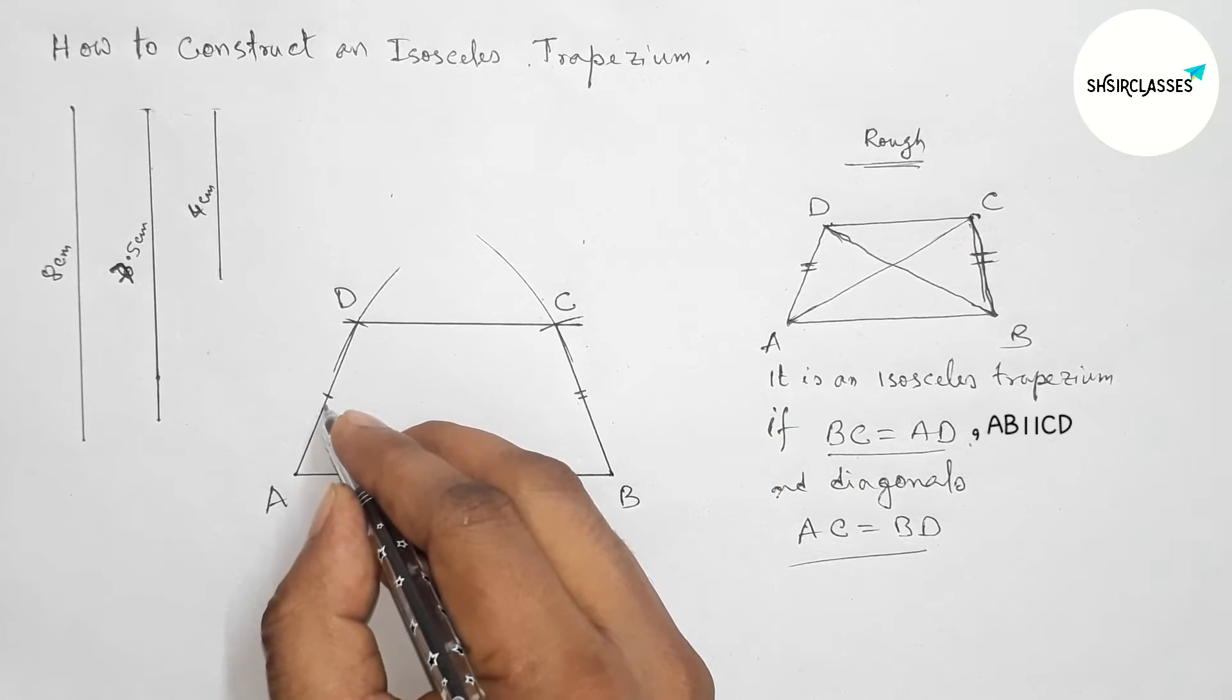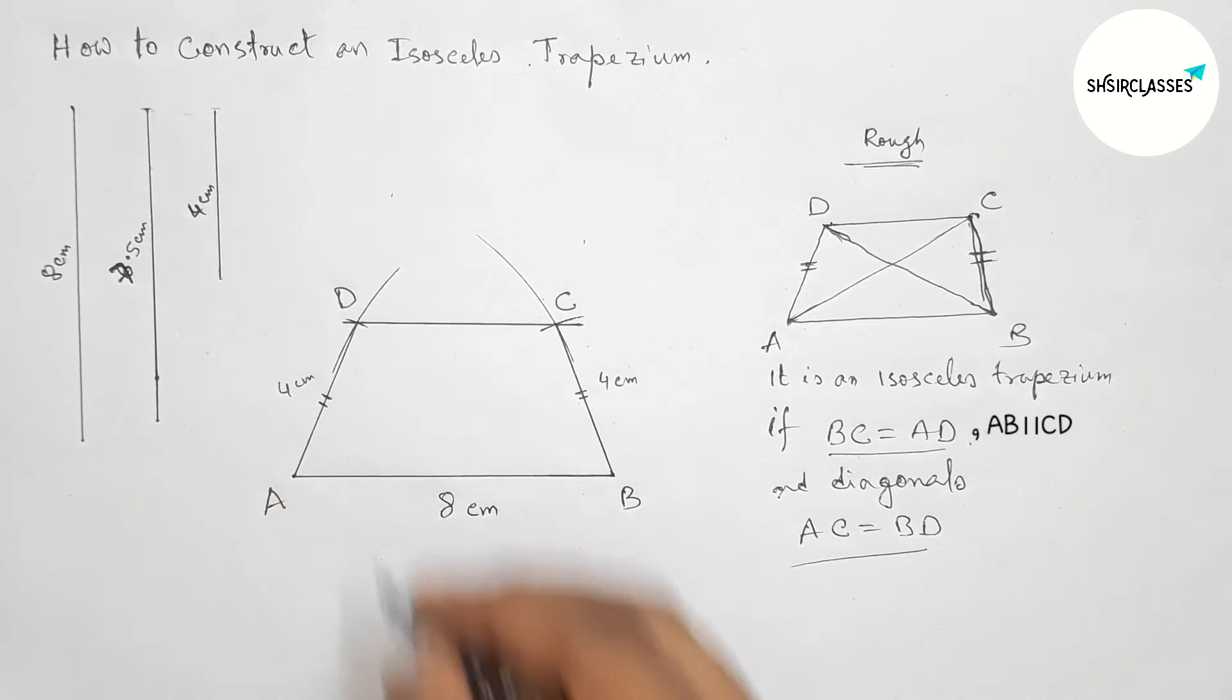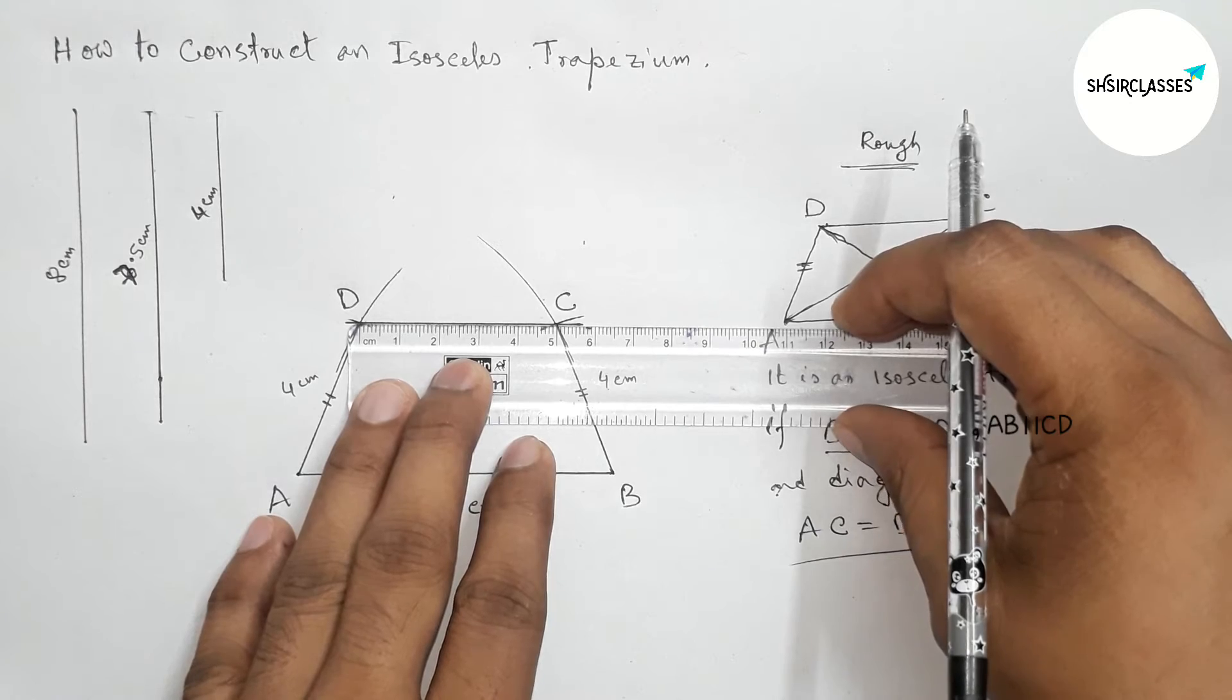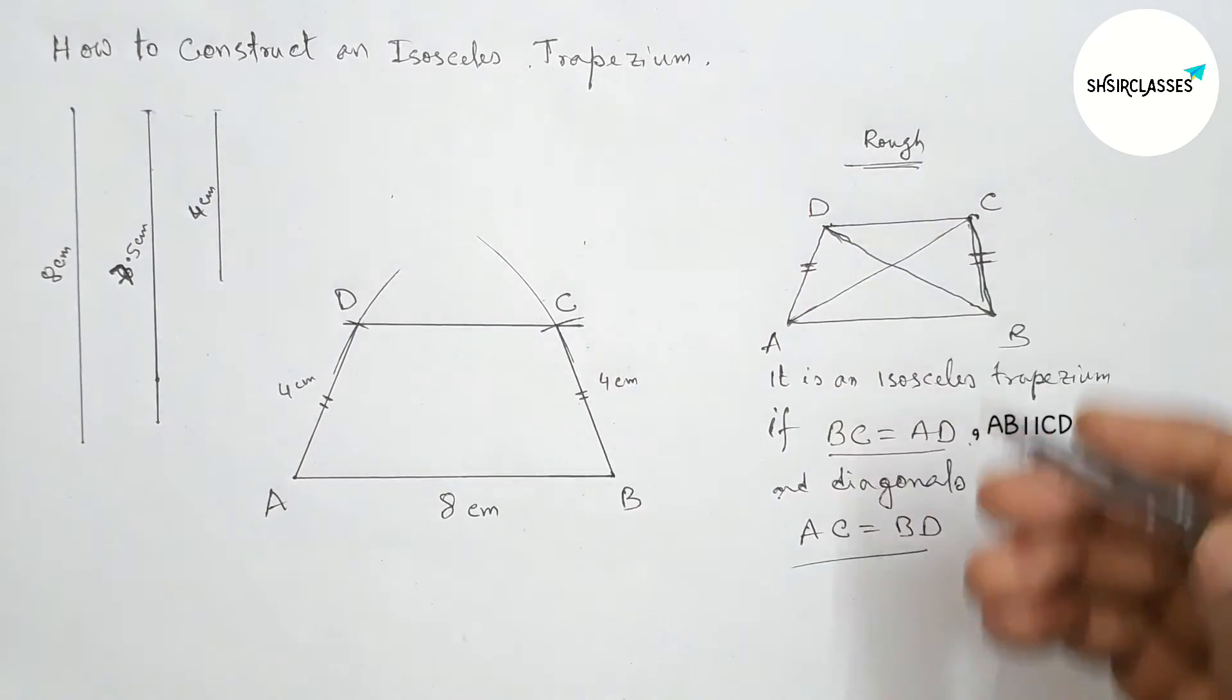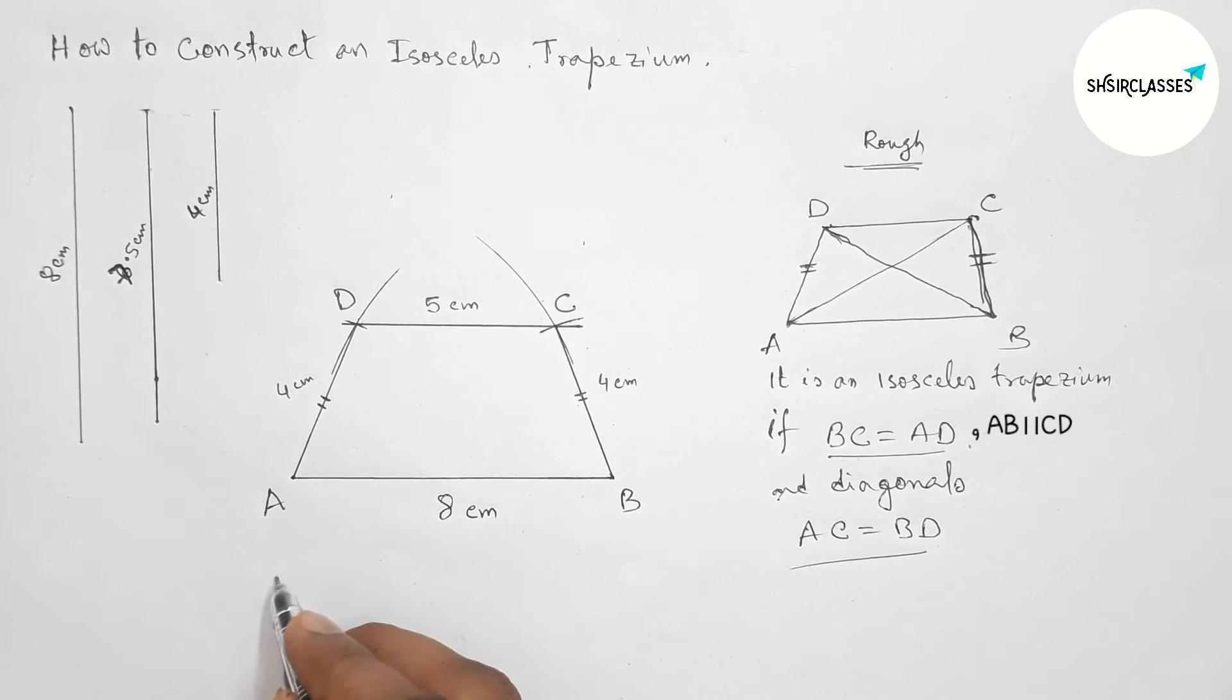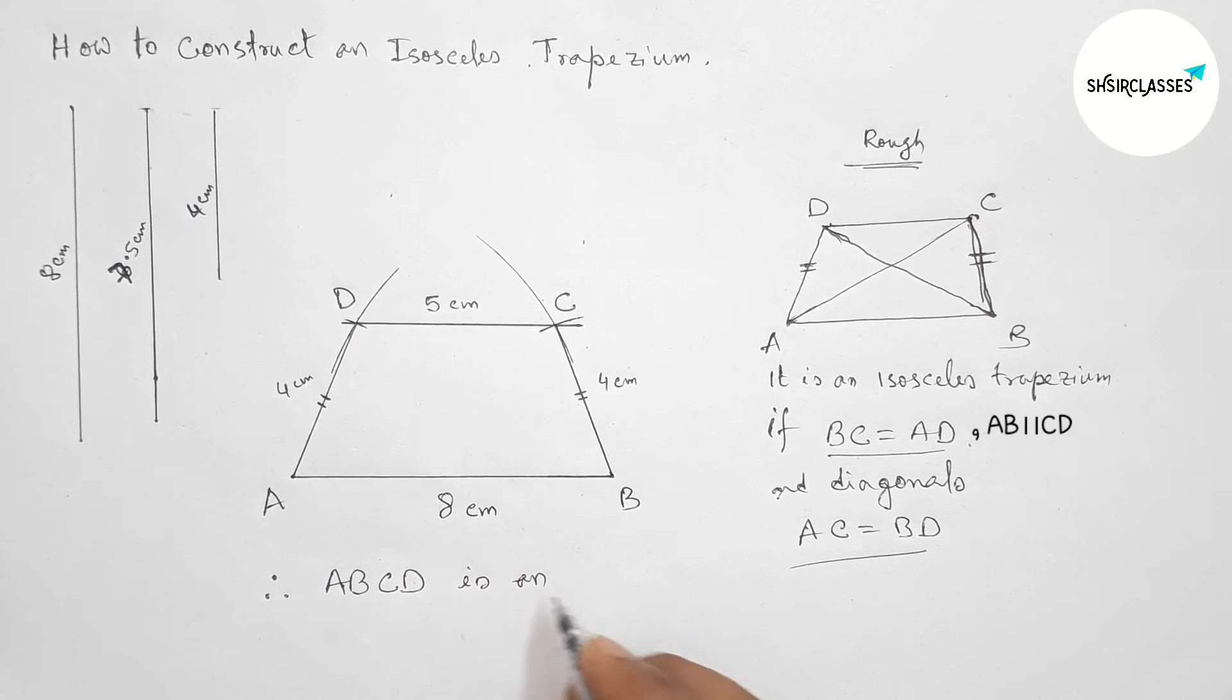So here this side and this side are equal. So this is 4 centimeters, this one 4 centimeters. And now measuring the side CD, so this is perfectly 5 centimeters. Okay, so therefore here ABCD is an isosceles trapezium.